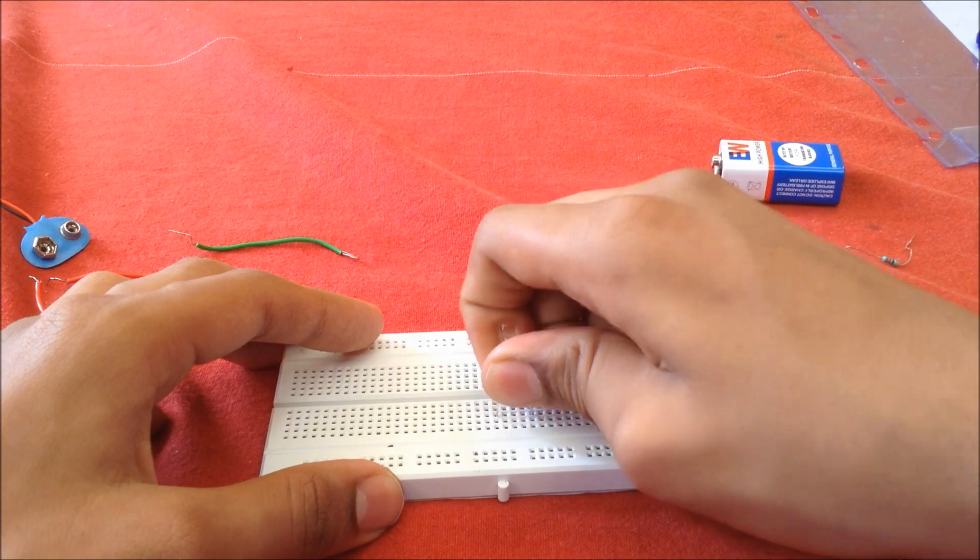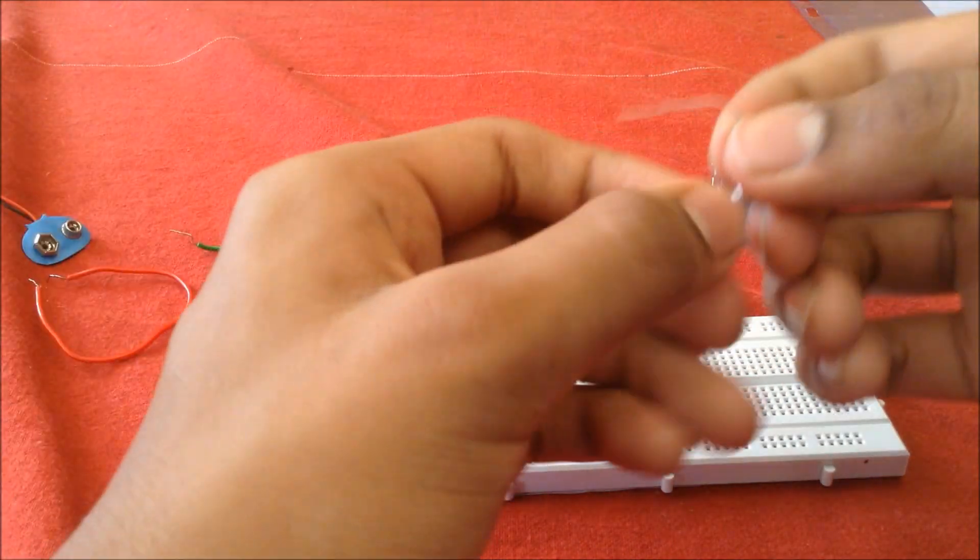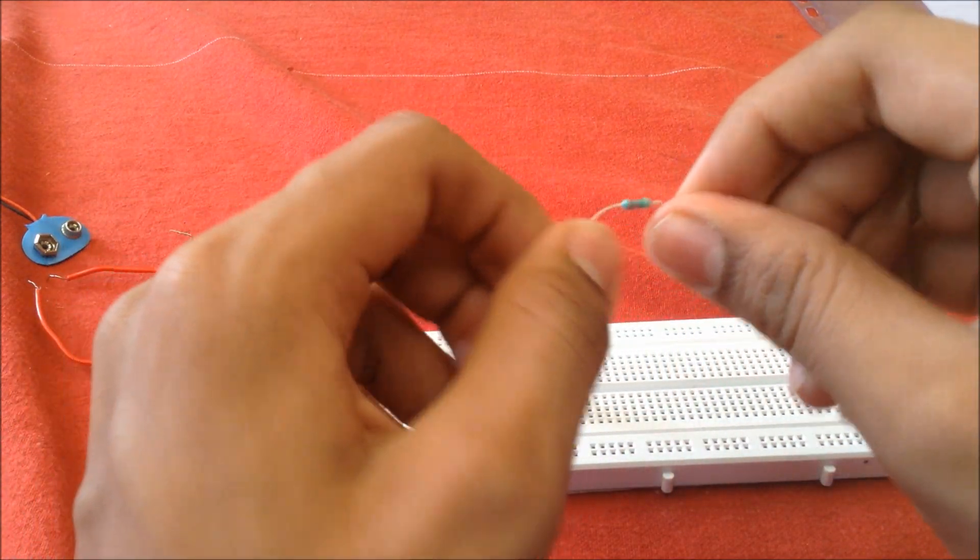Then we move on to the 220 ohm resistor. The color code is red, red, brown - that's 220.